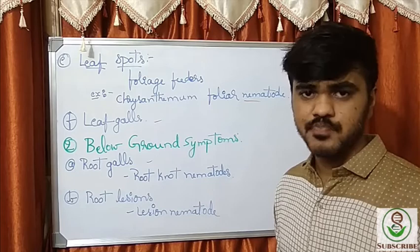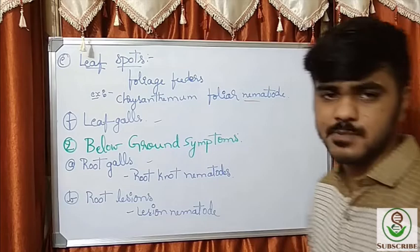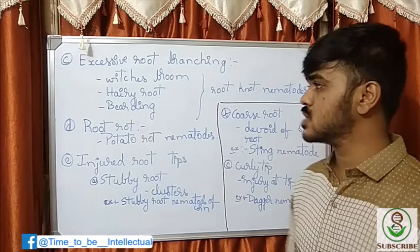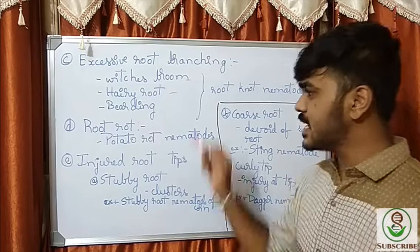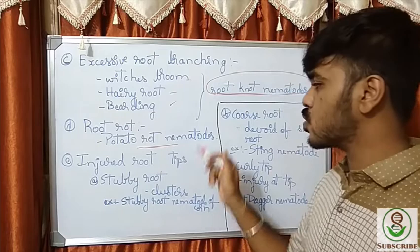For below-ground symptoms, the important ones are root galls, which are exhibited especially by the root-knot nematodes due to the hypertrophy character mentioned earlier. Next comes root lesions, exhibited by the lesion nematodes. Then there is excessive root branching, which usually leads to a witch's broom character, hairy root character, or bearding character, exhibited by root-knot nematodes. The next symptom is root rot, especially exhibited by the potato root rot nematodes.